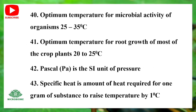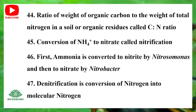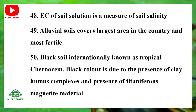Optimum temperature for microbial activity of organisms is 25 to 35 degrees Celsius. Optimum temperature for root growth of most crop plants is 20 to 25 degrees Celsius. Pascal is the SI unit of pressure. Specific heat is the amount of heat required for 1 gram of a substance to raise its temperature by 1 degree Celsius. The C:N ratio is the ratio of weight of organic carbon to weight of total nitrogen in the soil or organic residues. Conversion of ammonia to nitrate is called nitrification: ammonia is first converted to nitrite by Nitrosomonas, and then to nitrate by Nitrobacter. Denitrification is the conversion of nitrate into molecular nitrogen.